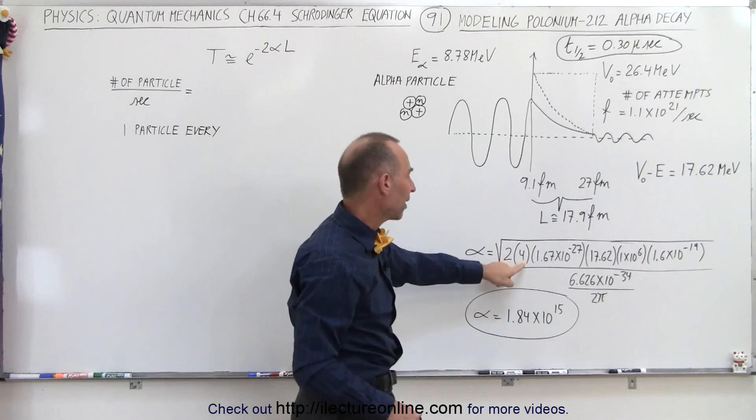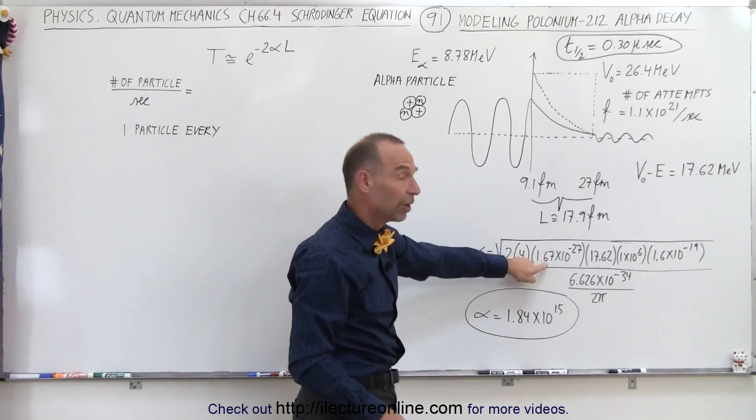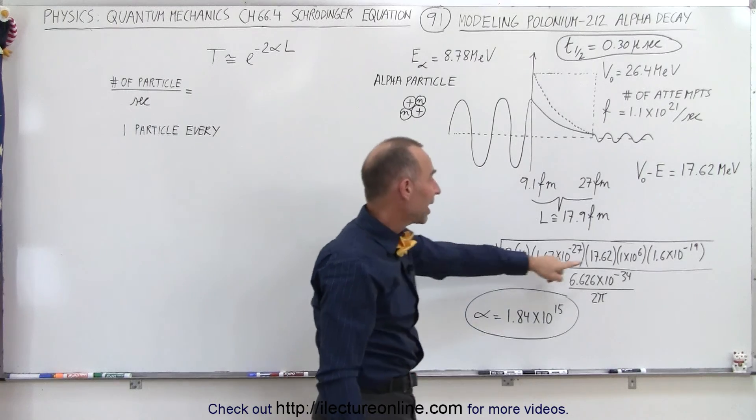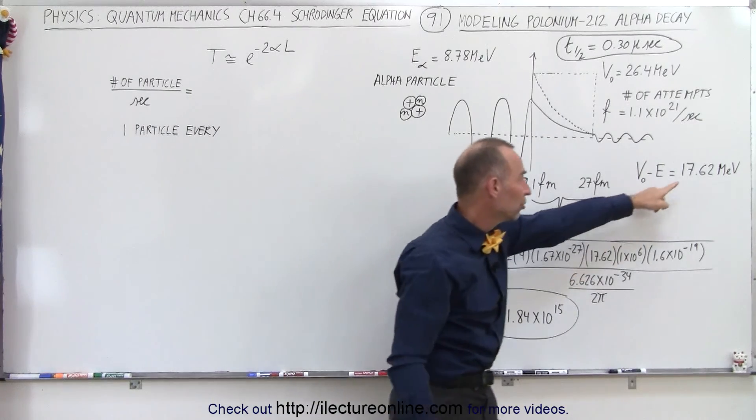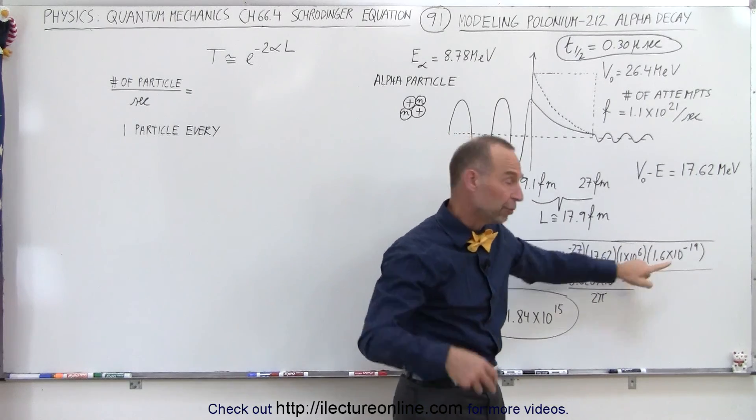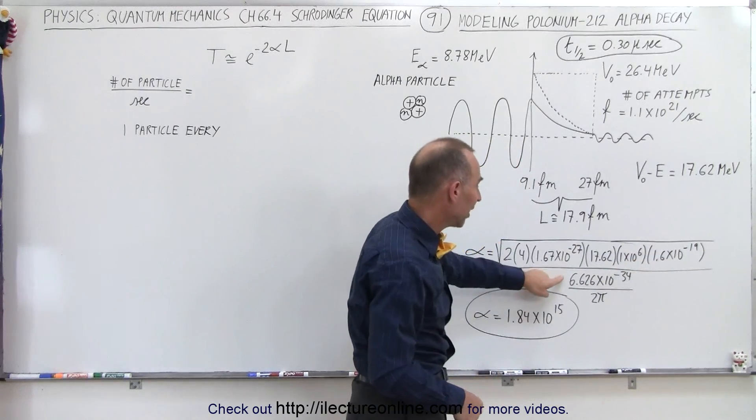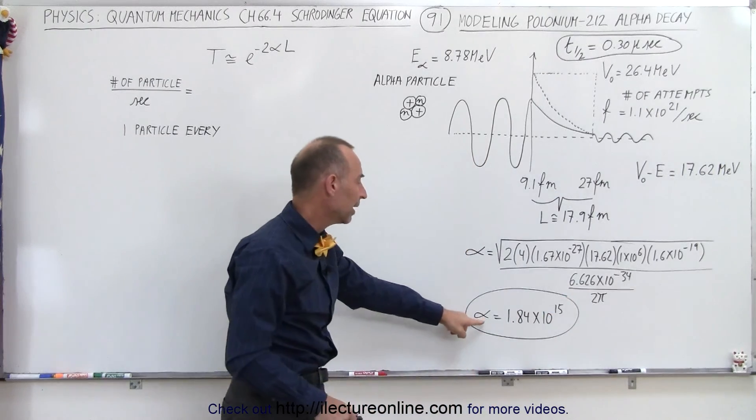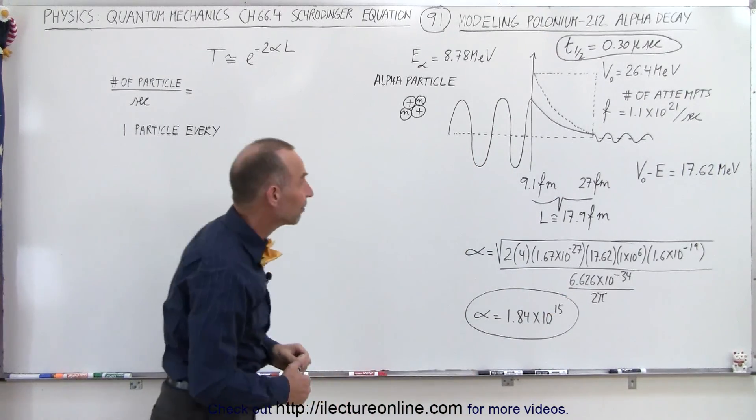So we take two times the mass, which is four times the mass of a proton, because an alpha particle has two protons and two neutrons, times the difference in the energy in million electron volts times the conversion from electron volts to joules, and divide by h-bar, which is h divided by 2π. When we do that, we get an alpha of 1.84 × 10^15.